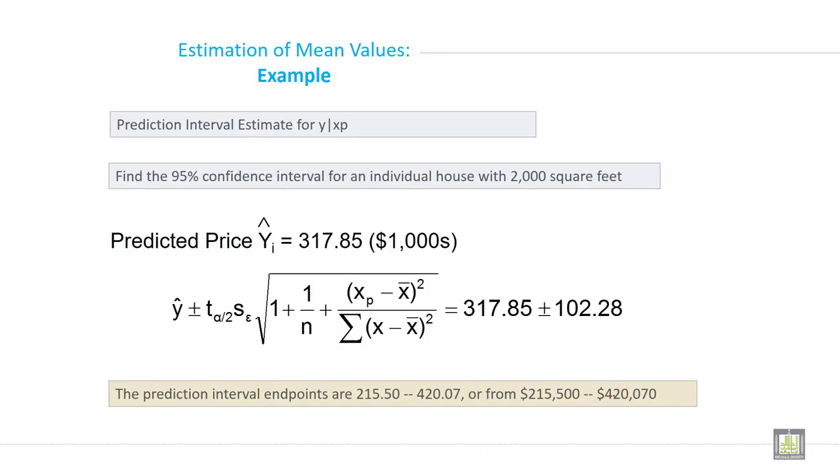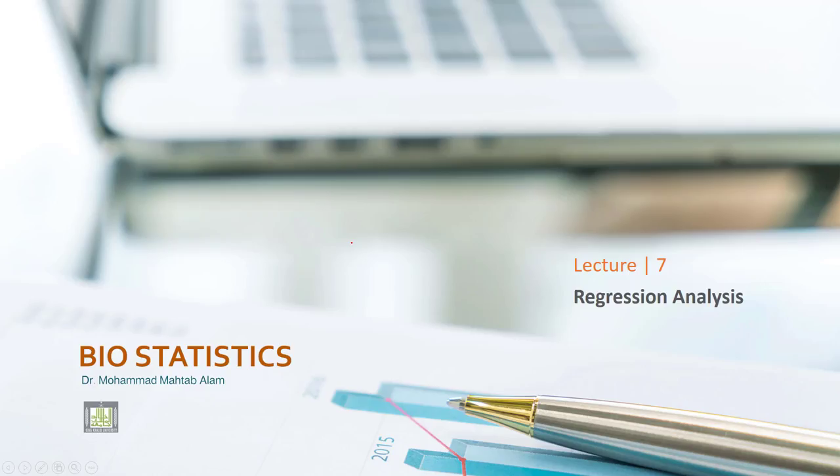Now, prediction interval estimate for Y. Find 95% confidence interval for an individual house. So this is also one example how to calculate the lower limit and upper limit.